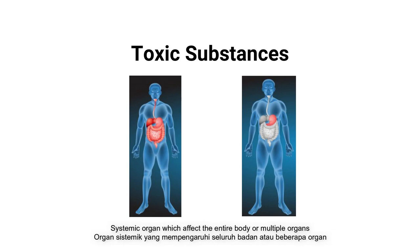Systemic toxin affects the entire body or multiple organs, whereas organ toxin only targets specific tissues or organs.